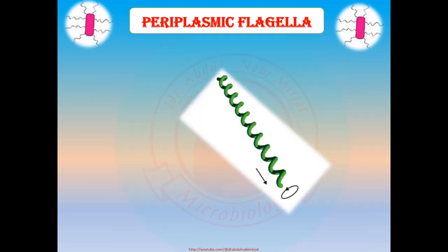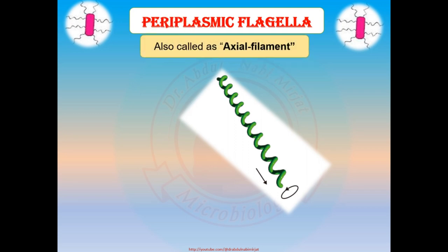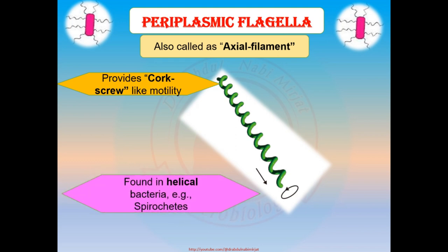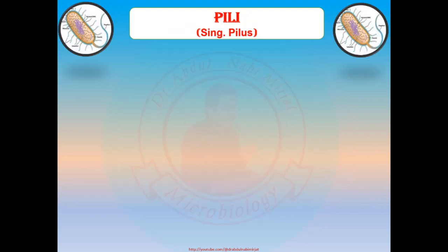Periplasmic flagella are a specialized form of flagellum, also called axial filament. This type of flagellum provides corkscrew-like motility and is found in helical-form bacteria such as spirochetes.